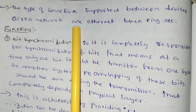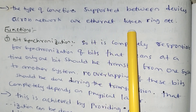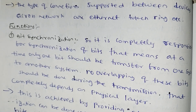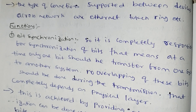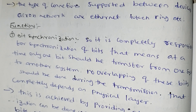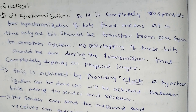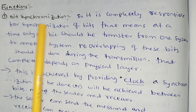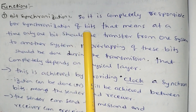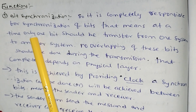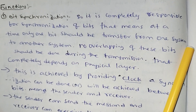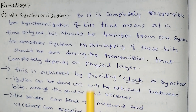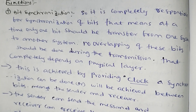The type of connection supported between devices across the network includes ethernet, ring, and token ring. The first function of the physical layer is bit synchronization. The physical layer is completely responsible for synchronization of bits — at a time, only one bit should be transferred from one system to another, with no overlapping of bits during transmission.